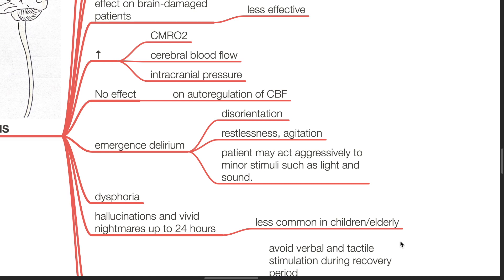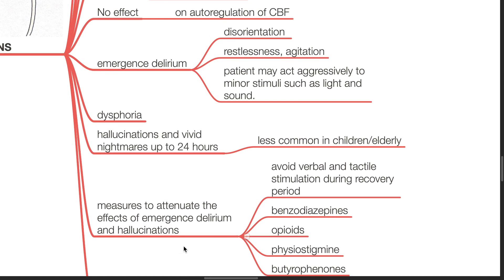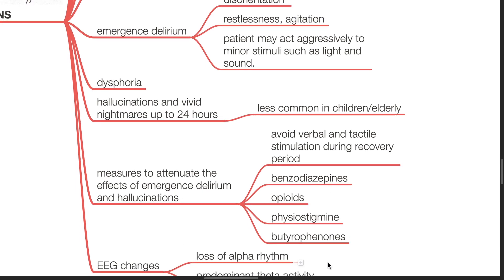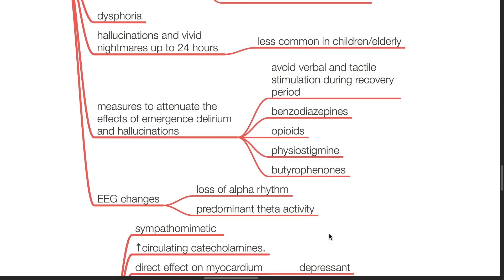Measures to attenuate the effects of emergence delirium and hallucinations: avoid verbal and tactile stimulation during the recovery period. Benzodiazepines, opioids, physostigmine, and butyrophenones may help. EEG changes include loss of alpha rhythm and predominant theta activity.